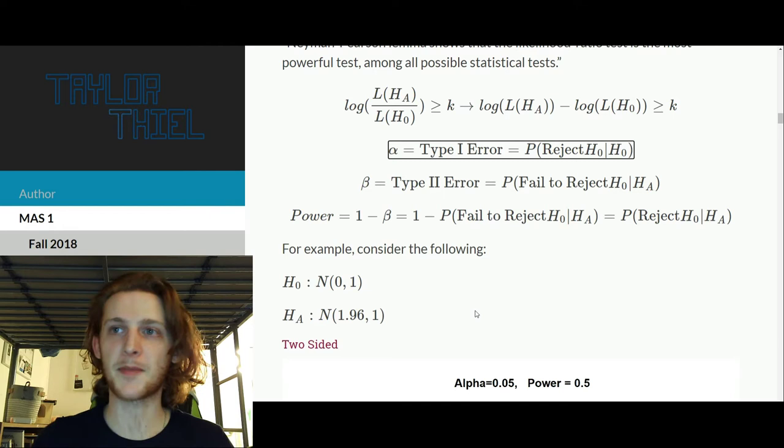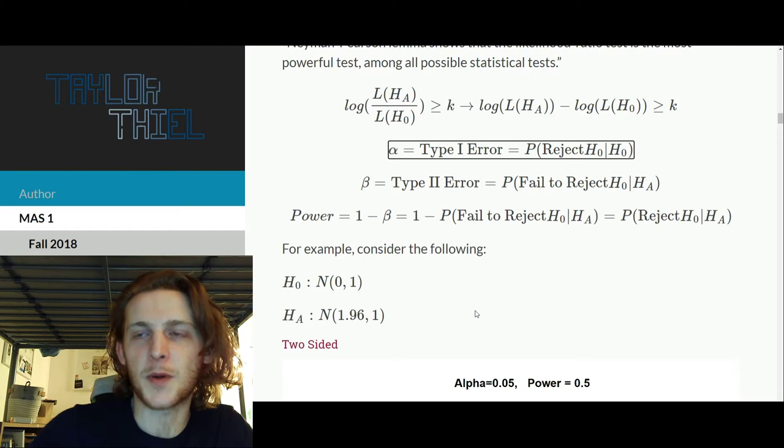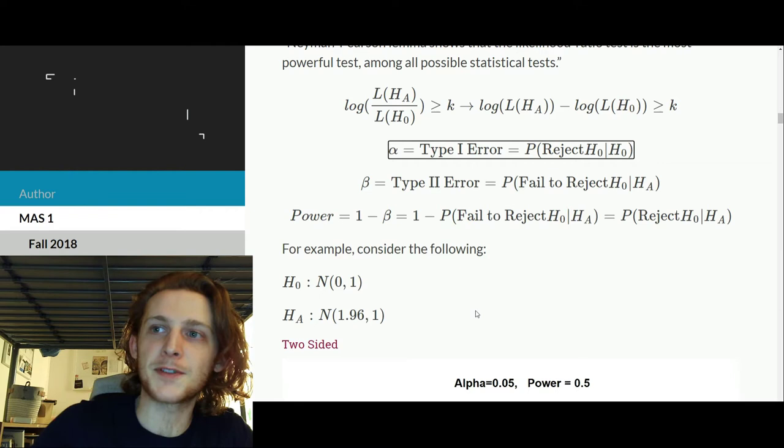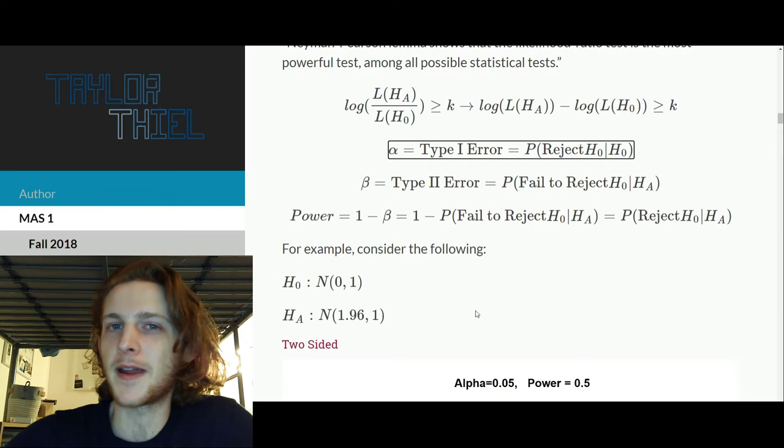And then finally, you have power, which is just 1 minus type 2 error. And this is a more intuitive metric. It's just 1 minus that same number. But if you do 1 minus the probability you fail to reject, given the alternative is true, that's the same as just saying the probability you reject the null, given the alternative is true, which is a more intuitive way of thinking about it.